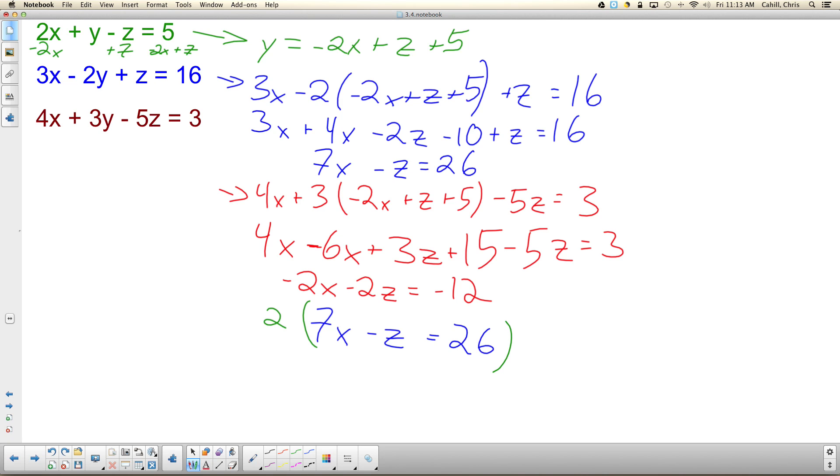So I'm going to multiply this by negative 2, because I like addition more than I like subtraction. So I get negative 14X plus 2Z equals negative 52. And I still get negative 2X minus 2Z equals negative 12. I'm going to add these. Negative 2X plus negative 14X is negative 16X. The Z's cancel out. So what's X equal? 4. An integer. Oh, that's so great.